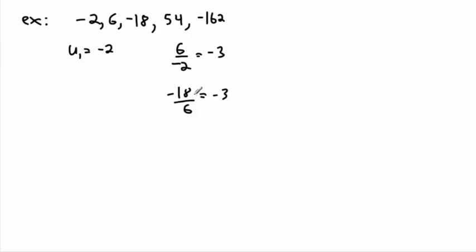I can do even more. How about this list? Negative 2, we'll say 6, negative 18, 54, negative 162. Again, u1 is going to be negative 2. That's the first term. And the common ratio, well, 6 divided by negative 2. That gives me negative 3. But negative 18 over 6, let's see if that really is still the same thing. And it still is negative 3. And you can keep going. 54 divided by negative 18 is negative 3. The idea then is that common ratio of negative 3.